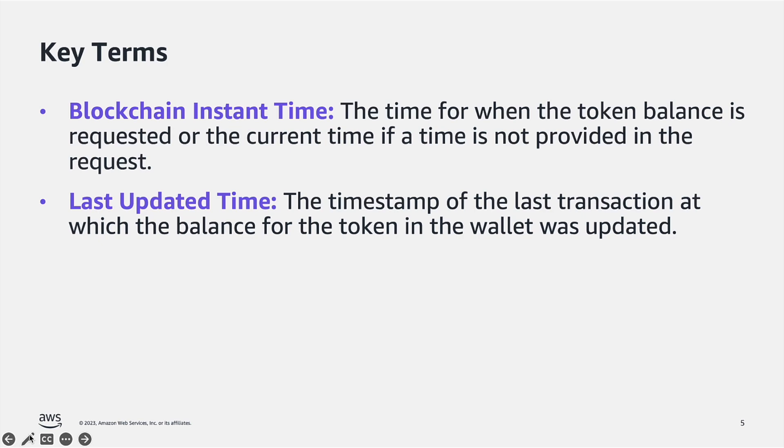Before we wrap up, I would like to go over what I mean by blockchain instant time and last updated time from the output I showed previously. As you can see here, the blockchain instant time is the time when the balance of the token was last requested, or the current time if the token balance was never requested, while the last updated time is the time when the balance for the token was last updated.